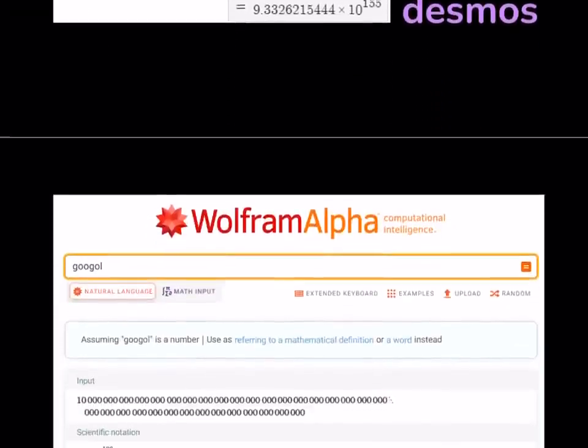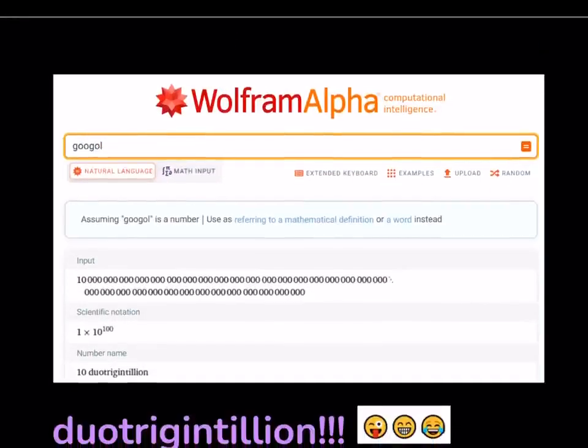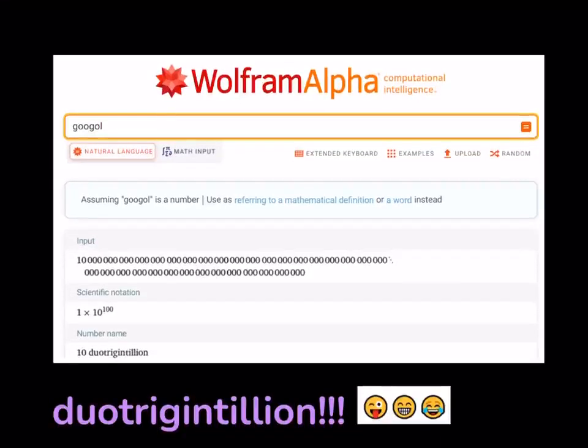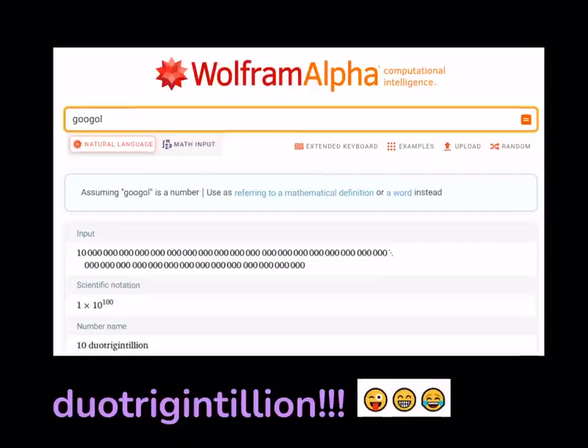Another large number that is well known is googol, not the website Google, but the number googol. It has basically 100 zeros that follow one. Interestingly, it's also called 10 Duotrigintillion. I kind of find that name interesting and funny too. Anyways, let's get started with our numbers.